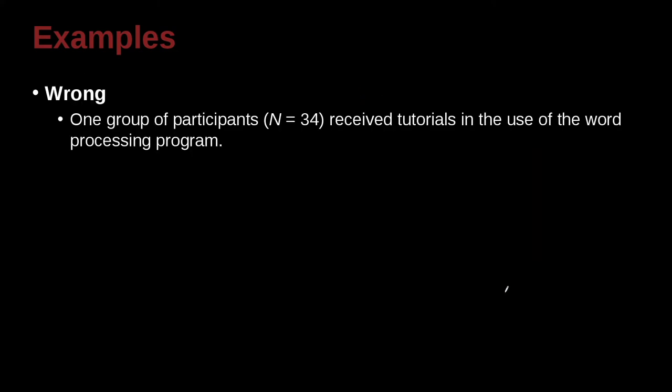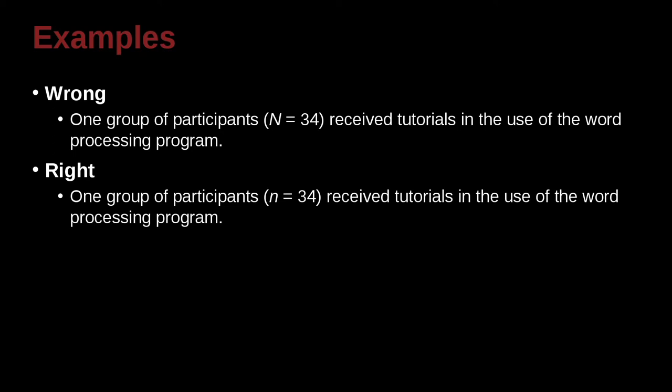One group of participants, N equals 34, received tutorials in the use of word processing program. And the correct way, of course, is the opposite of the problem we just had. So here we have one group, but here this N is the total sample. So we need to change this to be the sub-sample, which is the small n.